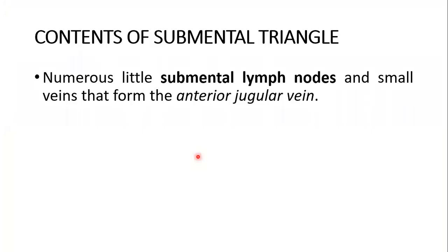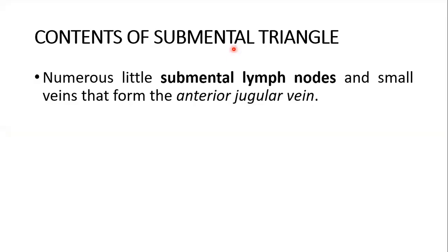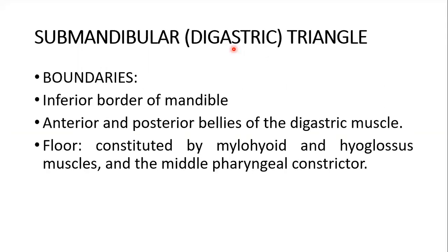The contents of the submental triangle are very simple — mainly the submental lymph nodes, and a small vein that forms the anterior jugular vein.